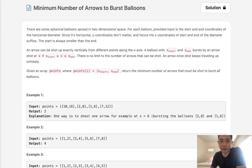Welcome to October's LeetCode Challenge. Today's problem is Minimum Number of Arrows to Burst Balloons.